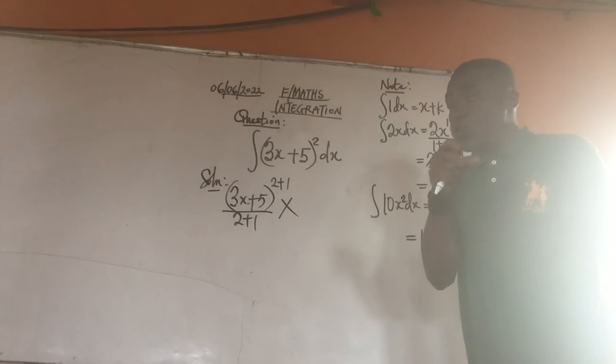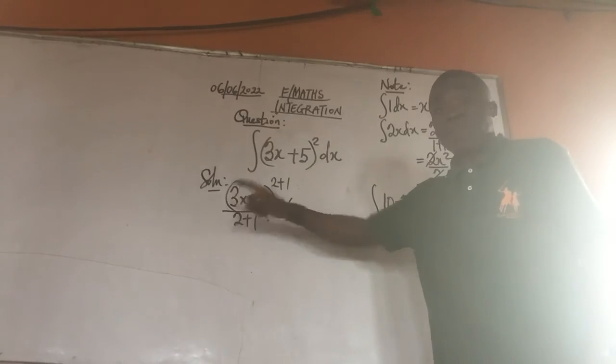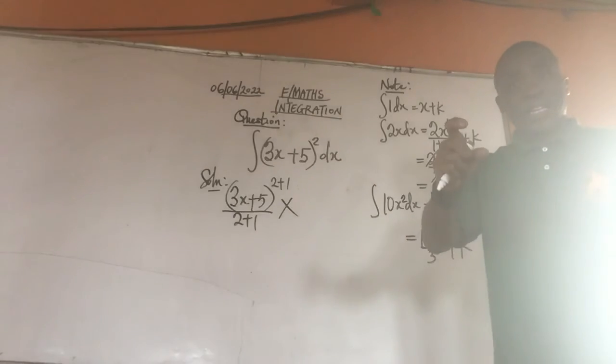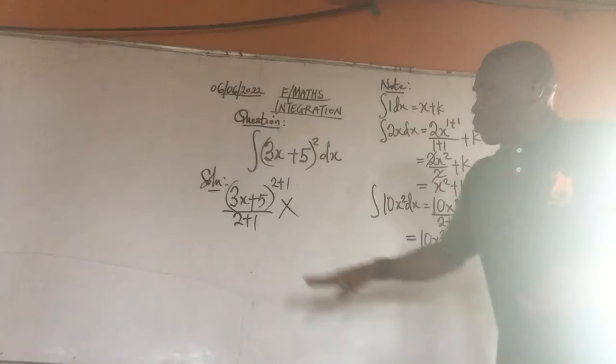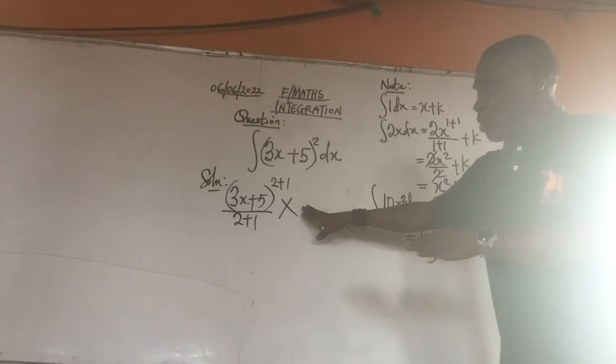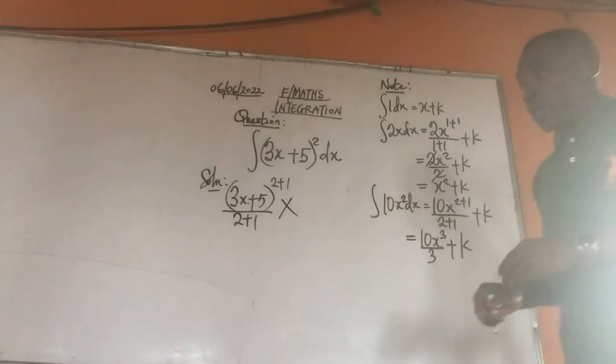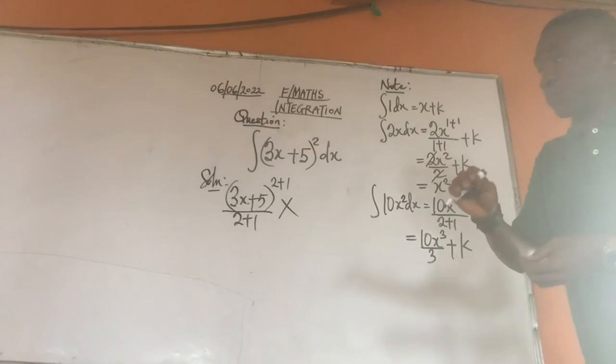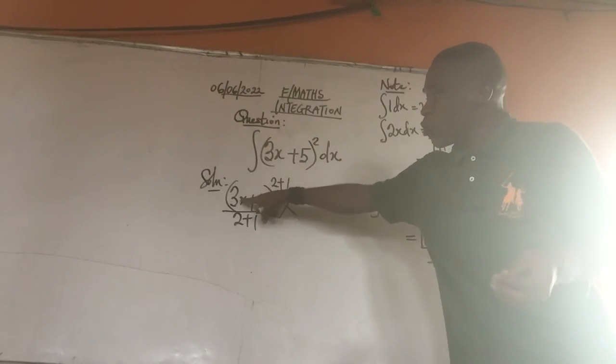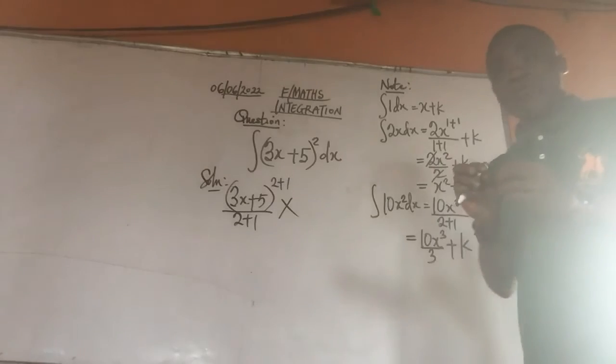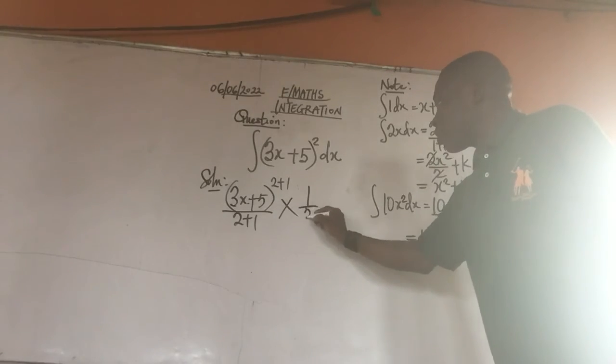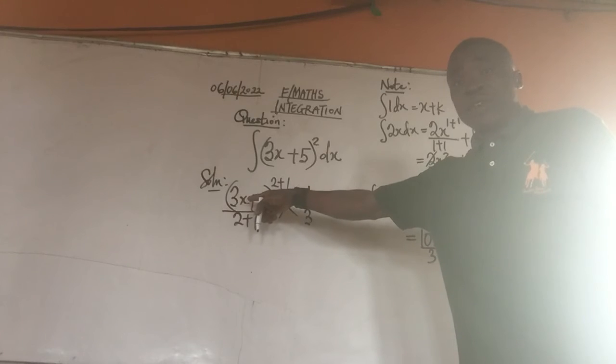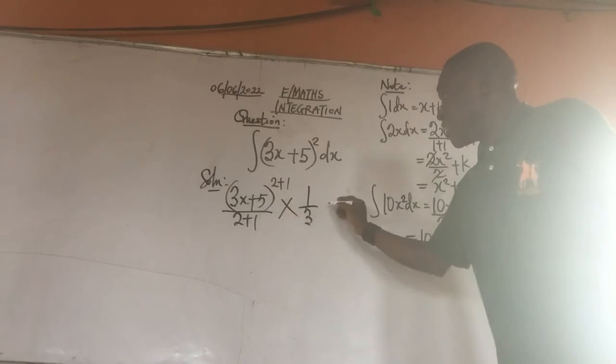Now, if we are looking for the inverse of the coefficient of x which is 3, that will give us 1 over 3. So, what we need to do here is, I have put in my multiplication sign here already, so I am saying times the reciprocate of the coefficient of x. That will give 1 over 3. So, we say times 1 over 3. The reciprocate of the coefficient of x, then plus k.